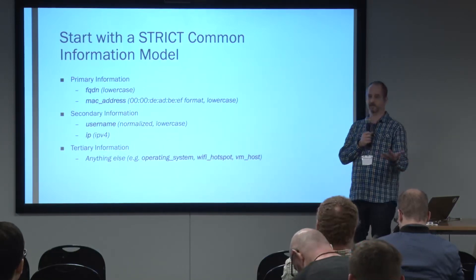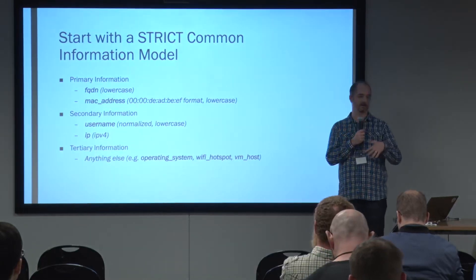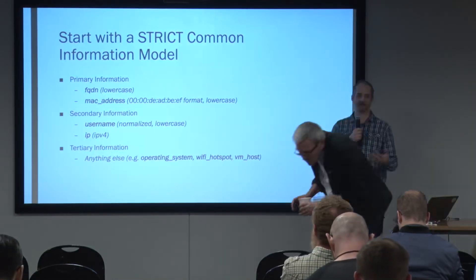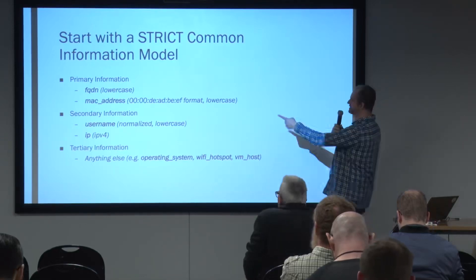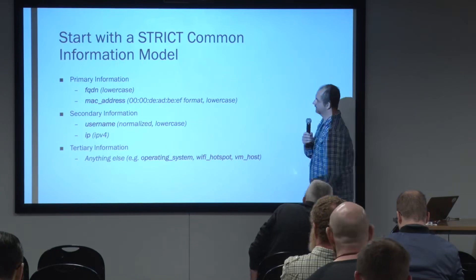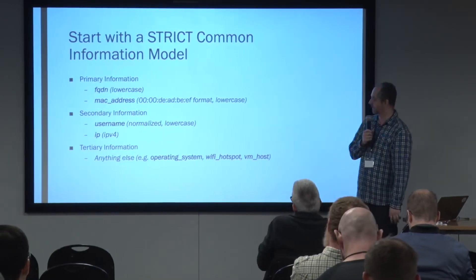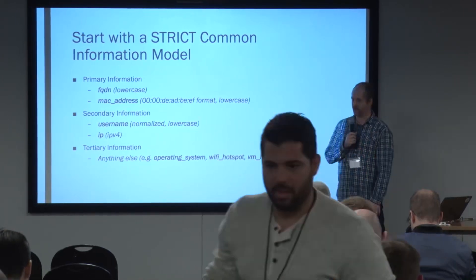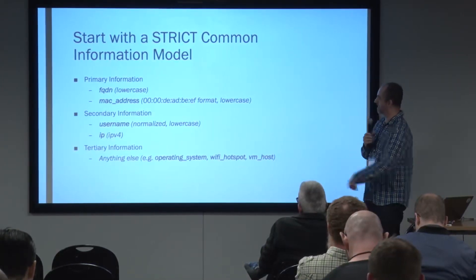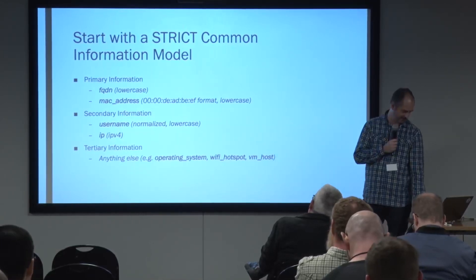Getting log data is easy. Using log data is hard because it's not very usable alongside other data. Building a common information model helps, but everyone hates the term common information model, so I made it really simple. I just care about four things. Primary information is the keys to my table: FQDN and MAC address. Secondary information is username and IP address, which is cool but I can't do transforms off that yet. Tertiary information is additional context.